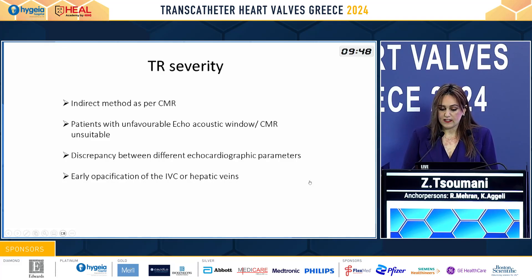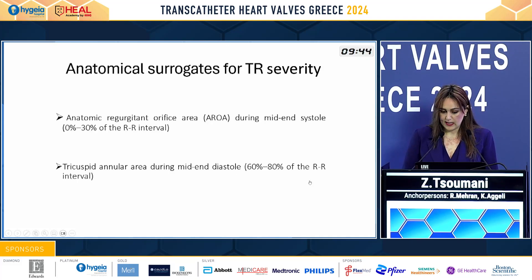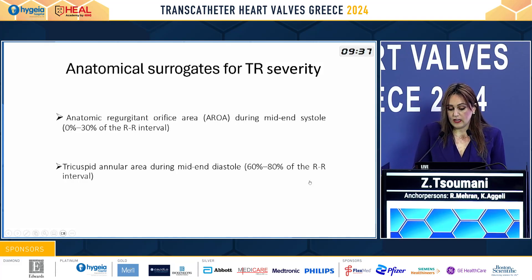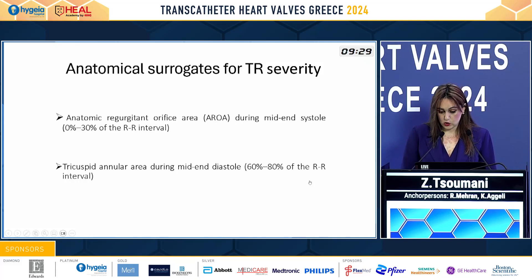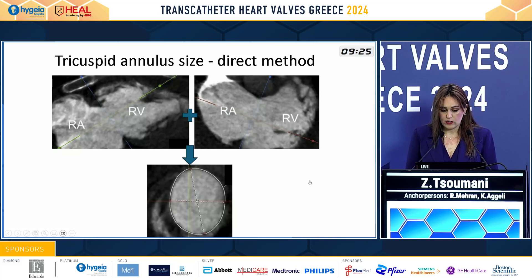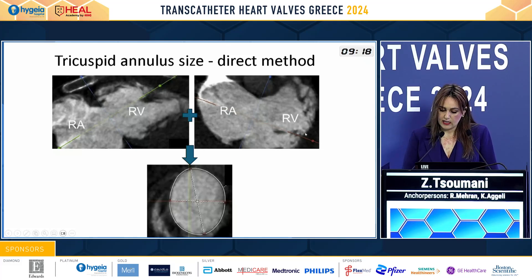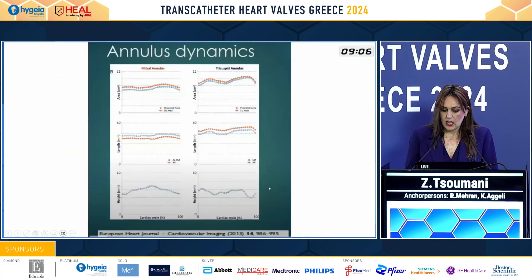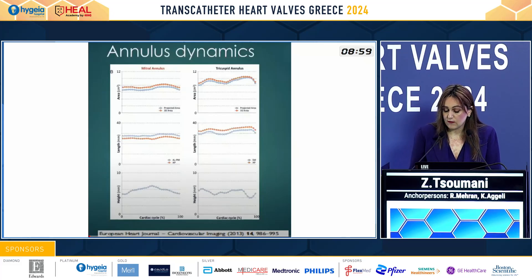An indirect sign of TR severity is the early opacification of the IVC or hepatic veins. We can calculate anatomical surrogates for TR severity using cardiac CT — the anatomic regurgitant orifice area during mid-to-peak systole or the tricuspid annular area during mid-to-end diastole. Using multiplanar reconstructions with the plane through the tricuspid valve and right ventricle, we can obtain a short axis view of the annulus and do measurements of area, perimeter, and dimensions in both systole and diastole.